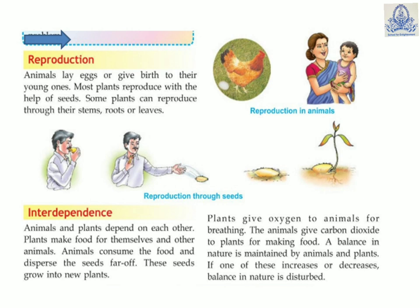Now, interdependence: animals and plants depend on each other. Plants make food for themselves and other animals. Animals consume the food and disperse seeds far away, which grow into new plants. Plants give oxygen to animals for breathing, and animals give carbon dioxide to plants for making food. A balance in nature is maintained by animals and plants — both are very important. If one increases or decreases, the balance in nature is disturbed, so we must take care of both.